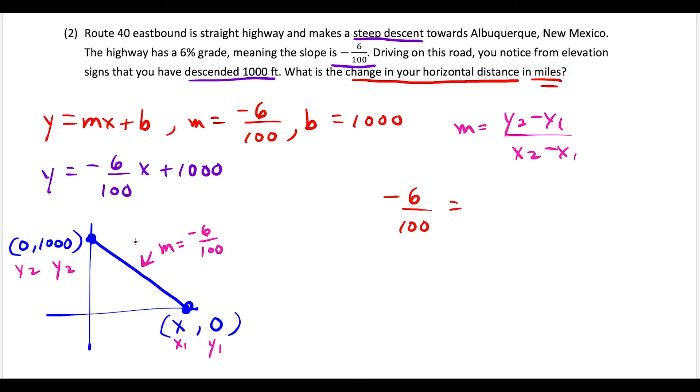Our y₂ - y₁ is 1000 - 0, divided by x₂ - x₁, which is 0 - x. So this gives us -6/100 = 1000/(-x).